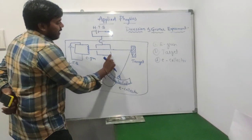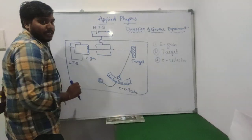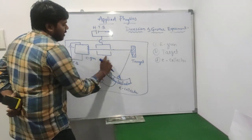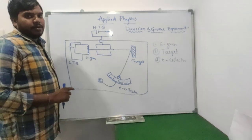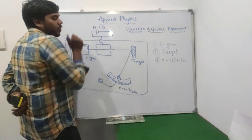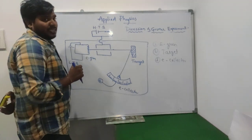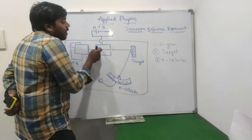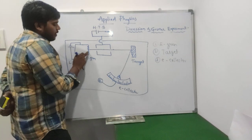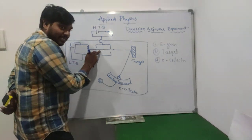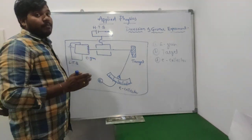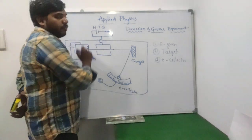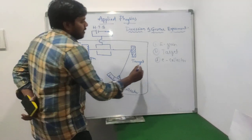Next we have the single slit cylinder, connected to the high tension battery. The function of the single slit cylinder is to increase the velocity of the electron beam. As the electrons move from the electron gun into the single slit cylinder, their speed increases due to the voltage applied by the high tension battery.